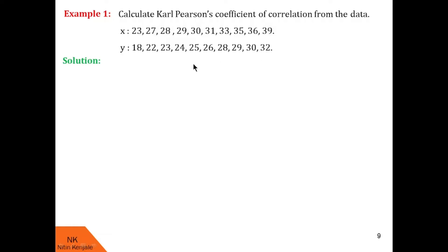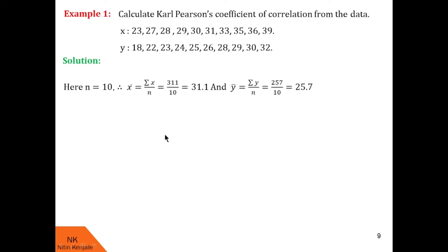Now let us first count the number of values in each data set: 1, 2, 3, 4, 5, 6, 7, 8, 9, 10. So 10 values of each data set are given, meaning n is equal to 10.